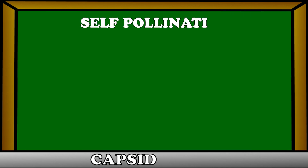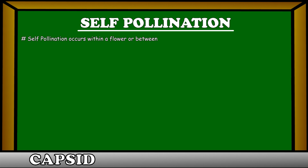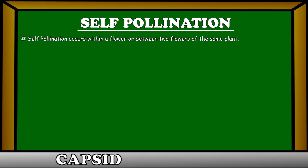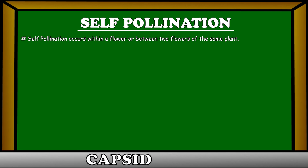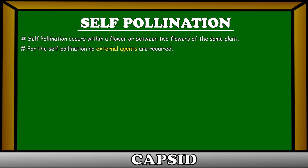First we will talk about self-pollination. Self-pollination occurs within a flower, or between two flowers of the same plant. For self-pollination, no external agents are required.